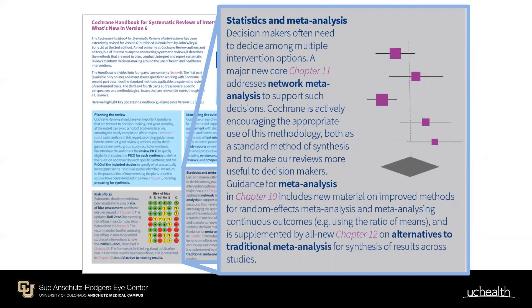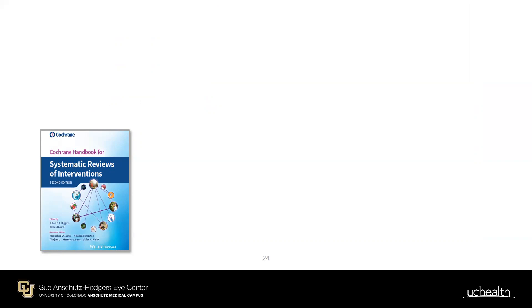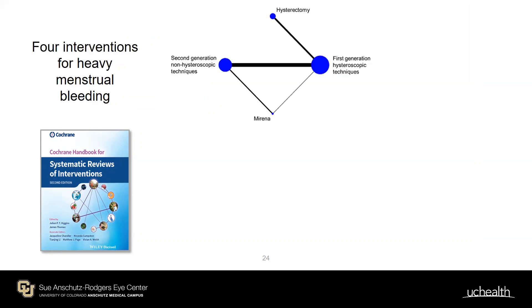There's a new chapter on network meta-analysis, and Cochrane is actively encouraging its appropriate use both as a standard synthesis method and to make reviews more useful for decision makers. While a forest plot compares two interventions, many conditions have multiple interventions. For example, heavy menstrual bleeding has four options: hysterectomy, first generation hysteroscopic techniques, second generation techniques, and Mirena — all plotted on a network graph.